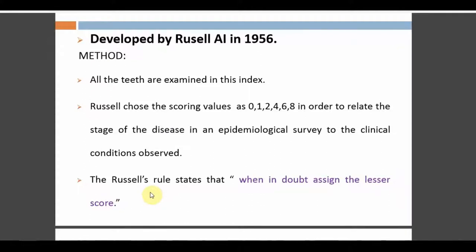Russell's rule states: when in doubt, always give the lesser score. So if you are confused between 1 and 2, give 1. If confused between 0 and 1, give 0. If confused between 6 and 8, give 6. When in doubt, assign the lesser score.